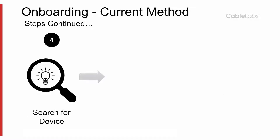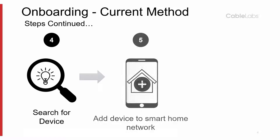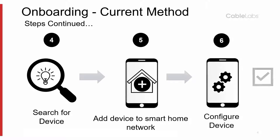Once the device is connected to the network, the app is used to search for or discover the device. Once discovered, the device can be onboarded into the smart home's IoT management system. And finally, after onboarding into the smart home's management system, the device can be configured and used normally.